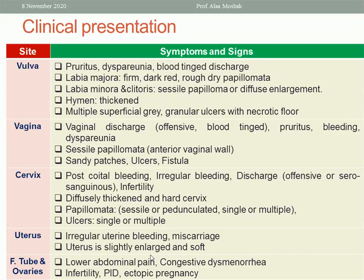What about the cervix? If the cervix is affected, there may be post-coital bleeding, discharge which may be serous or purulent or offensive if infected, irregular bleeding, or the patient may complain of infertility. The cervix may be diffusely thickened and hard. There may be papilloma, either sessile or pedunculated, single or multiple.